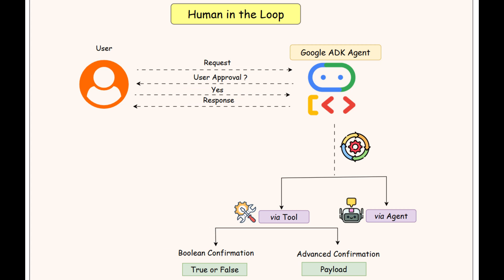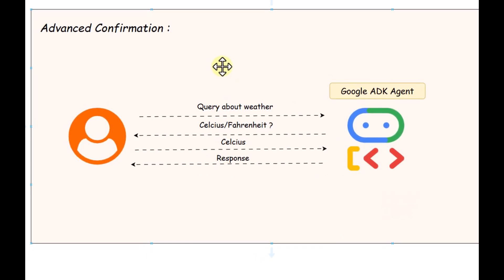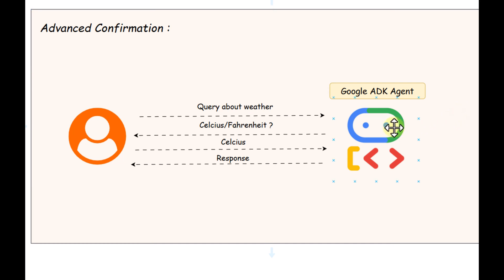In our last video we implemented the human-in-the-loop pattern using the Google ADK agent, covering the tool part. In this video we are going to focus on advanced confirmation — instead of just passing a true or false, the user can pass a certain payload. We are going to implement a scenario where the user asks for weather from the Google ADK agent.